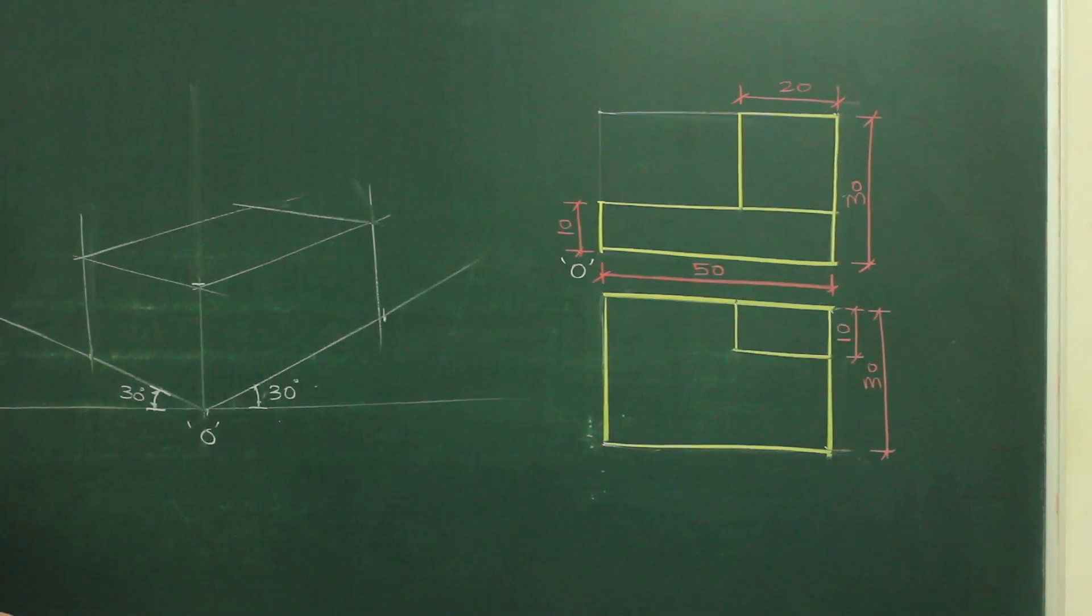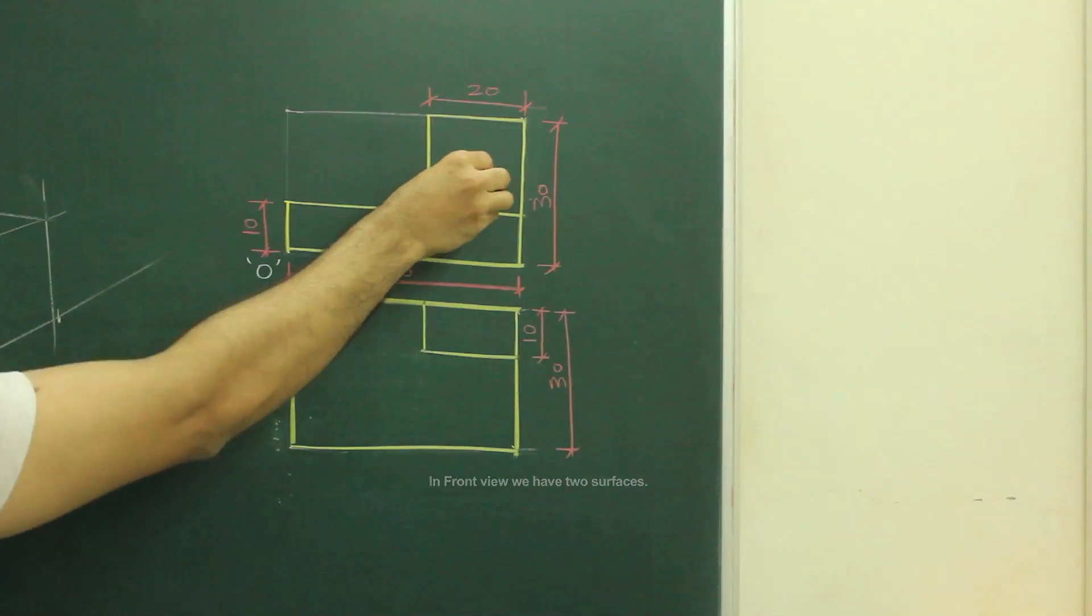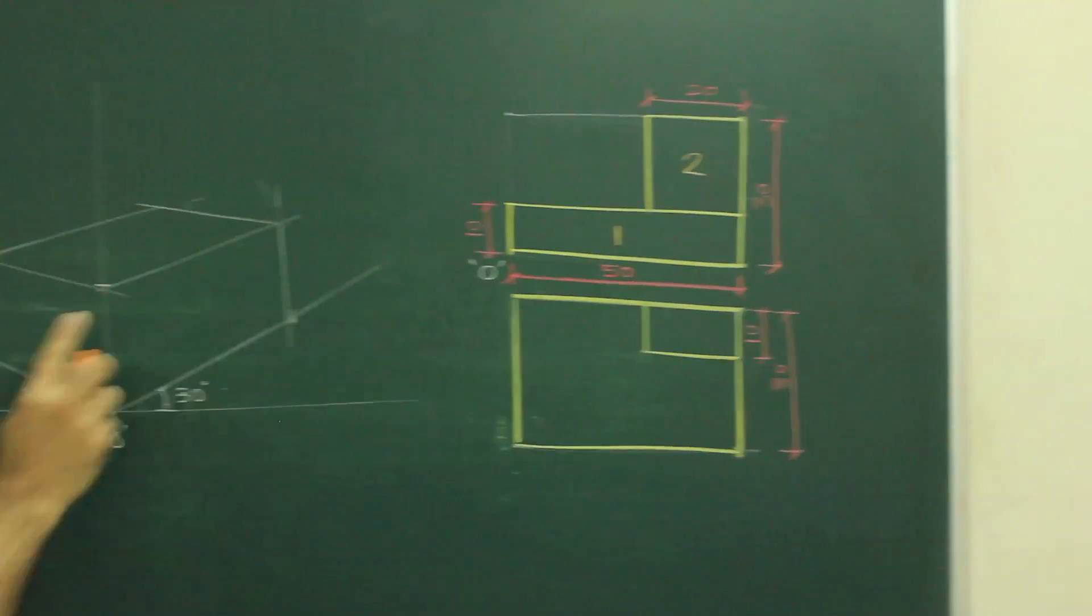After layout, when you see front view, there are two surfaces, 1 and 2. There is a dark line in between. That means this 1 and 2, we can't draw it directly over here.